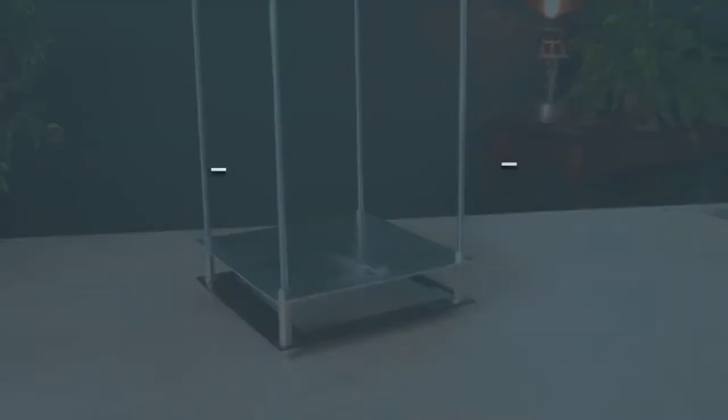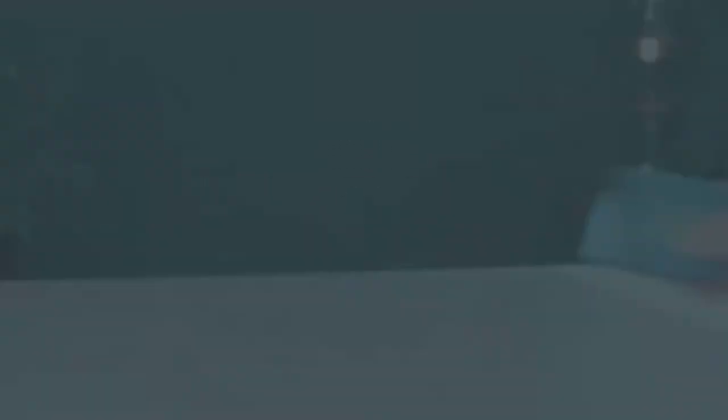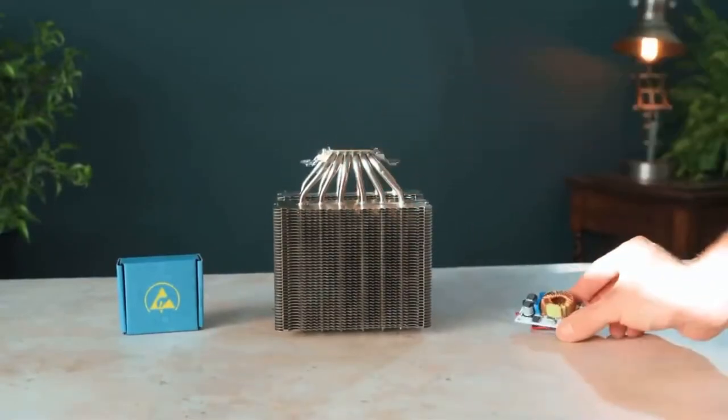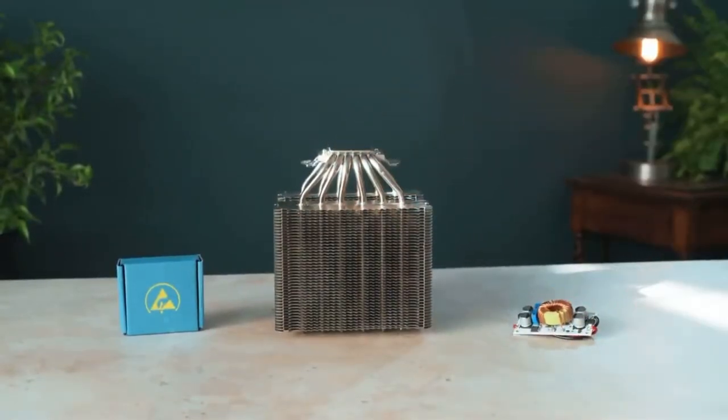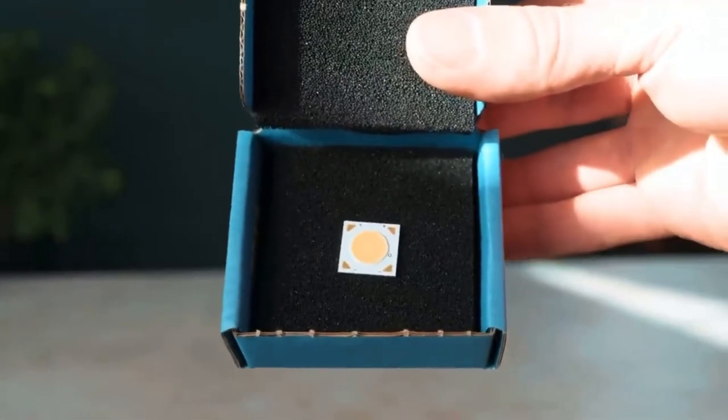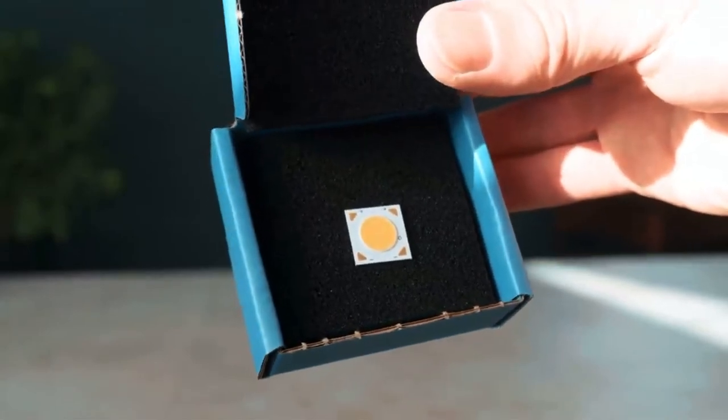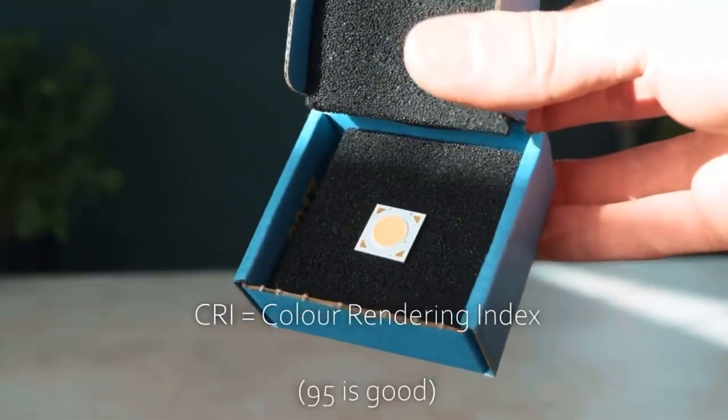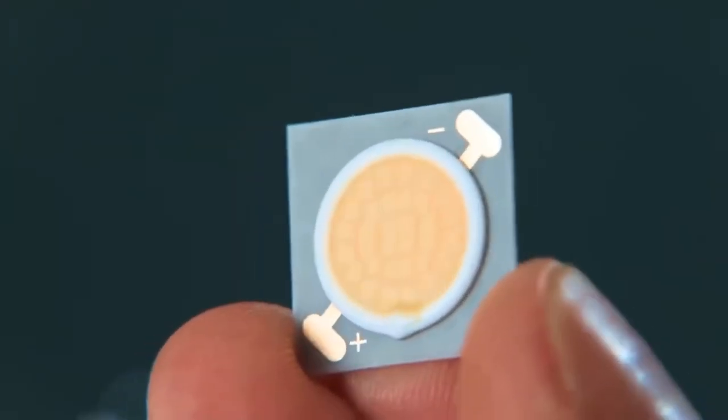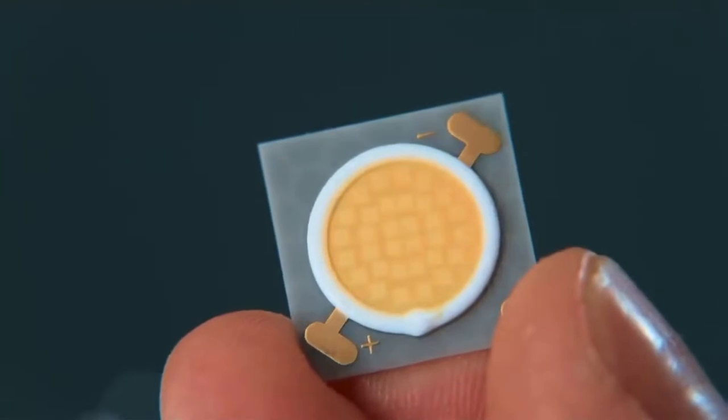And the first component we're going to add is the light source. For this we'll need a 100W LED, a heatsink and a power board, links to all of which you can find in this video's description. As we want the projector to have vivid and vibrant colors, I recommend choosing an LED with a high color rendering index, or CRI. This does mean that you'll be spending a bit more on it, but it's money well spent as it directly affects the final image in a significant way.